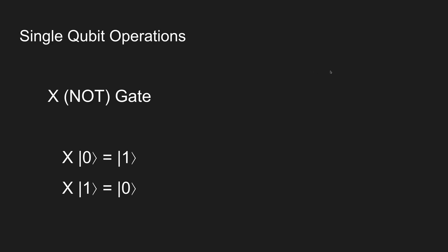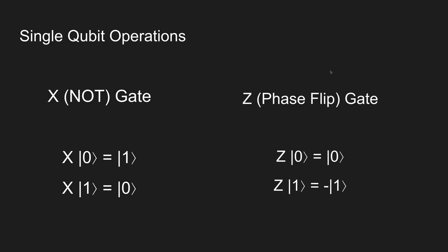The other gate in this video is the Z gate, also called the phase flip gate. If the Z gate operates on a zero qubit state, nothing actually happens — there's no change. But if it finds a one state, it will change the sign, adding a negative sign to that state. So that's the phase flip gate, and you can see it's conditional on what the actual state is.